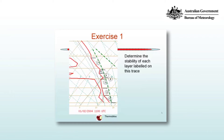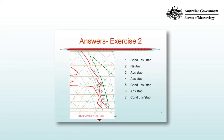Now here's an exercise. Determine the stability of each layer labelled on this trace. Layer 1 is conditionally unstable — stable compared to the dry adiabatic lapse rate, but unstable compared to the saturated adiabatic lapse rate. Layer 2 appears neutral. Layer 3 is absolutely stable, and layer 4 is an inversion, so that's definitely absolutely stable. Layer 5 is conditionally unstable — unstable for saturated motion. Layer 6 is absolutely stable, though not quite an inversion. Layer 7 is conditionally unstable or stable.